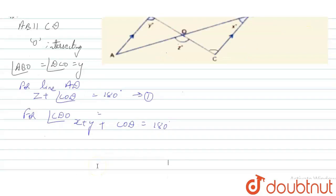Now what will we do from 1 and 2? From 1 and 2, we will say Z plus COD is equal to X plus Y plus COD, as the sum of both are 180 degrees. So COD and COD gets cancelled.